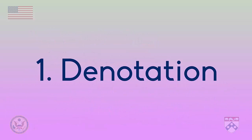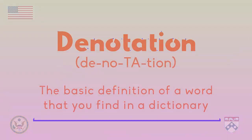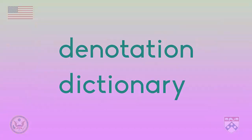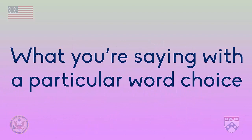Let's start with denotation. Denotation means the basic definition of a word that you'd find in a dictionary. Both denotation and dictionary begin with the letter D, which may help you remember this concept. Think of denotation as what you're saying with a particular word choice.